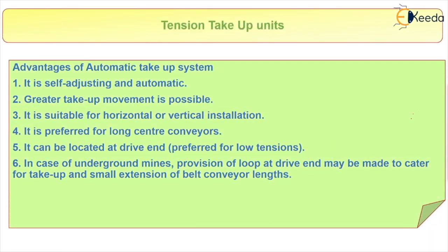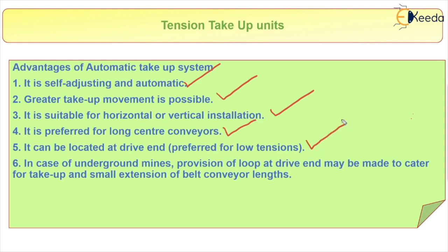What are the advantages of the automatic take-up system? Number one: as it is automatic, it is self-adjusting. Second: greater take-up movement is possible. Third: it is suitable for horizontal or vertical installation. Fourth: it is preferred for long center conveyors. Fifth: it can be located at the drive end, preferred for low tensions.